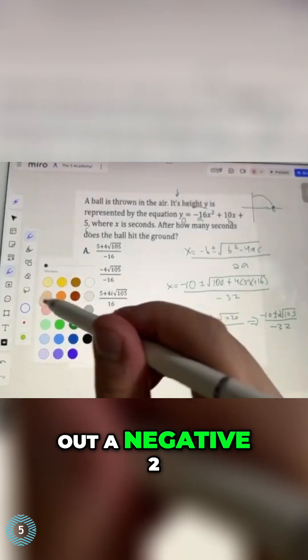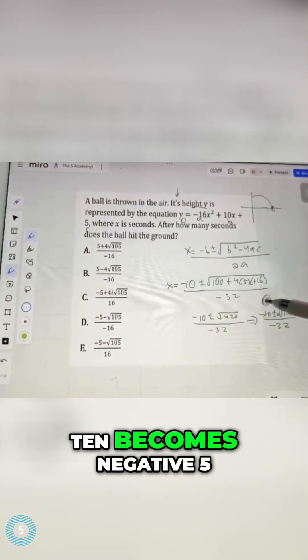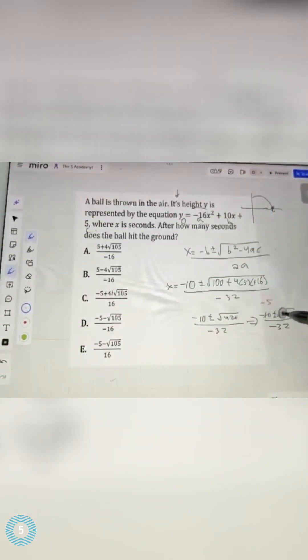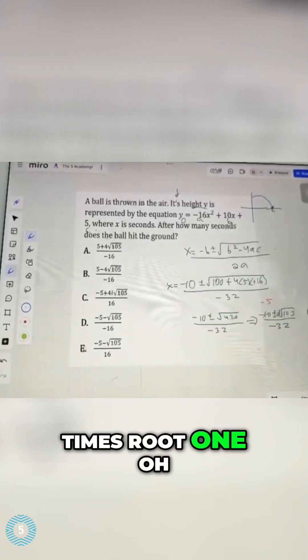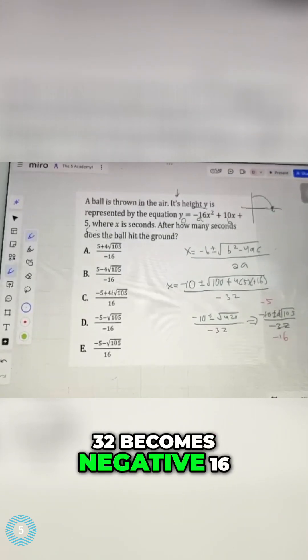And all I have to do left is cancel out a negative 2 from each term. Negative 10 becomes negative 5. This is going to become just a 1 times root 105. And then negative 32 becomes negative 16.